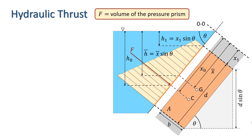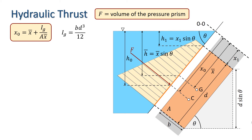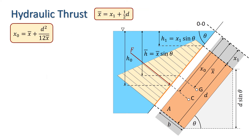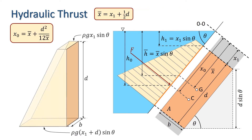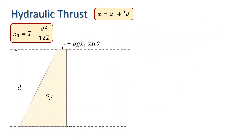Now let's look at the centre of pressure. The direct formula tells us that X0 equals X bar plus IG over A X bar, where IG is the second moment of area of A about its centre of gravity. For a rectangle of width B and height D, this is B D cubed over 12. The area of the rectangular surface is B D, so we have X bar plus D squared over 12 X bar. Returning to our pressure prism, we will see that the line of action of the hydraulic thrust goes through the centre of gravity of the pressure prism. Let GP denote the centre of gravity of the pressure diagram and let Y bar be the distance of GP from the top of the trapezium.